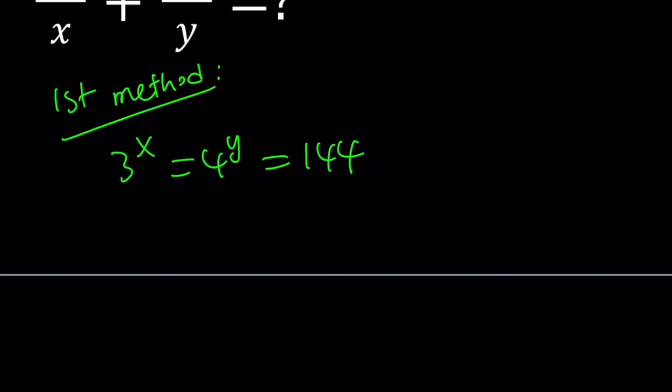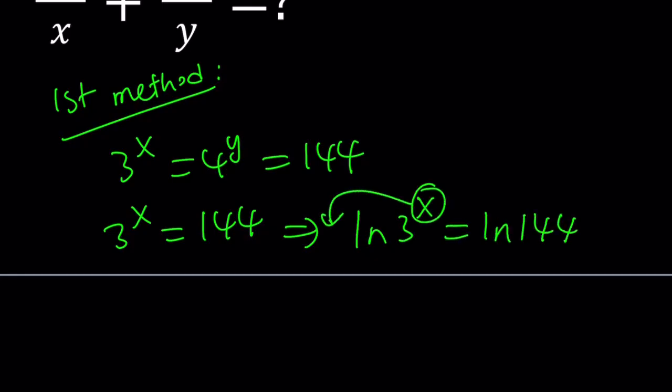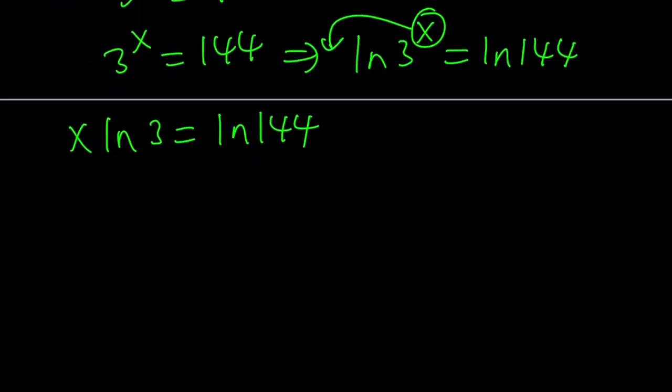We have 3 to the x equals 4 to the y equals 144. We can take logs here because we have 3 to the x equals 144. We can ln both sides. That's going to give us ln 3 to the x equals ln 144 and we can bring the x down. That gives us x ln 3 equals ln 144. Now isn't that beautiful - by logging both sides with base e, and any base is okay, we get rid of the exponent. So now we can isolate x from here. x can be written as ln 144 over ln 3.